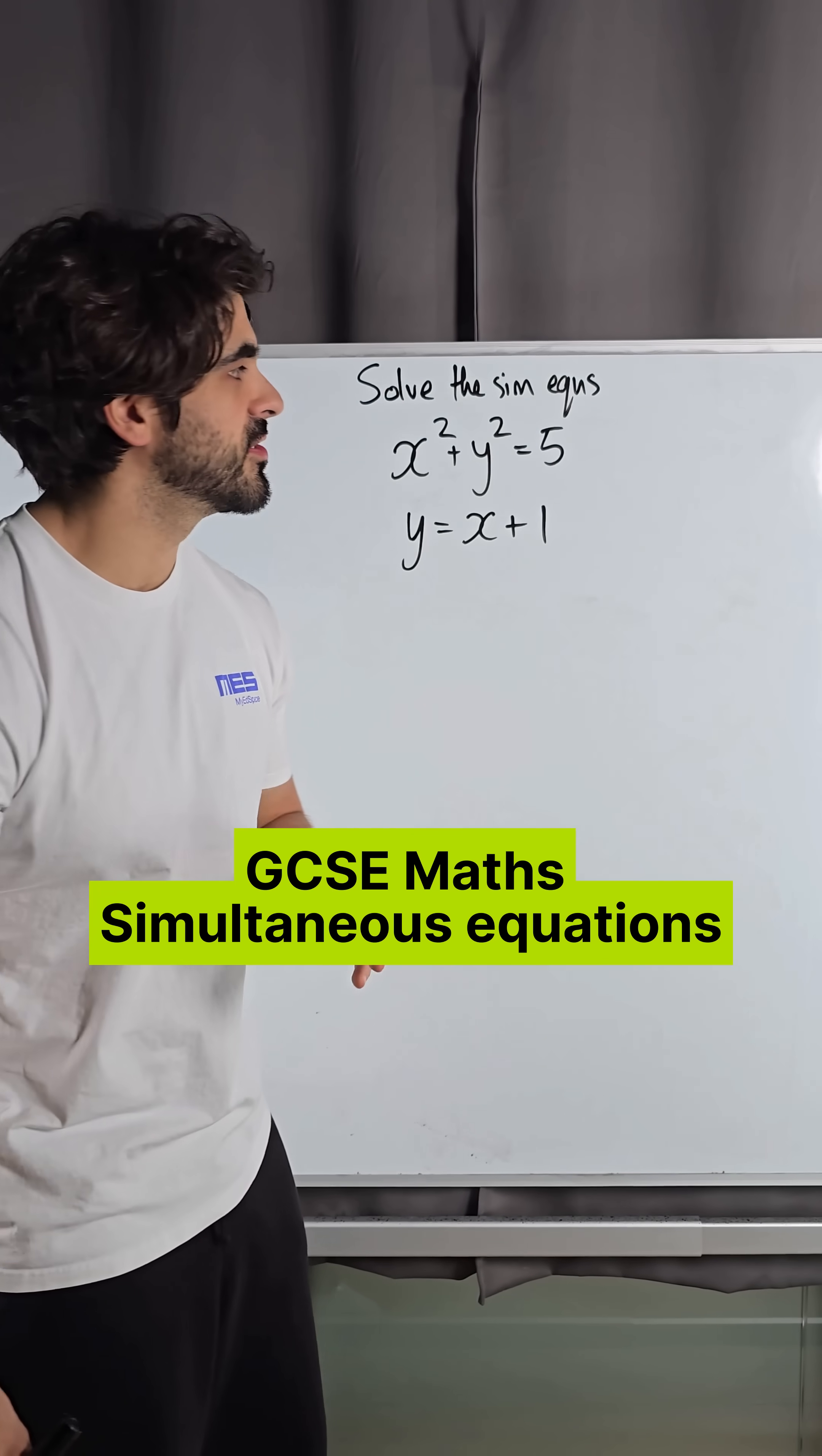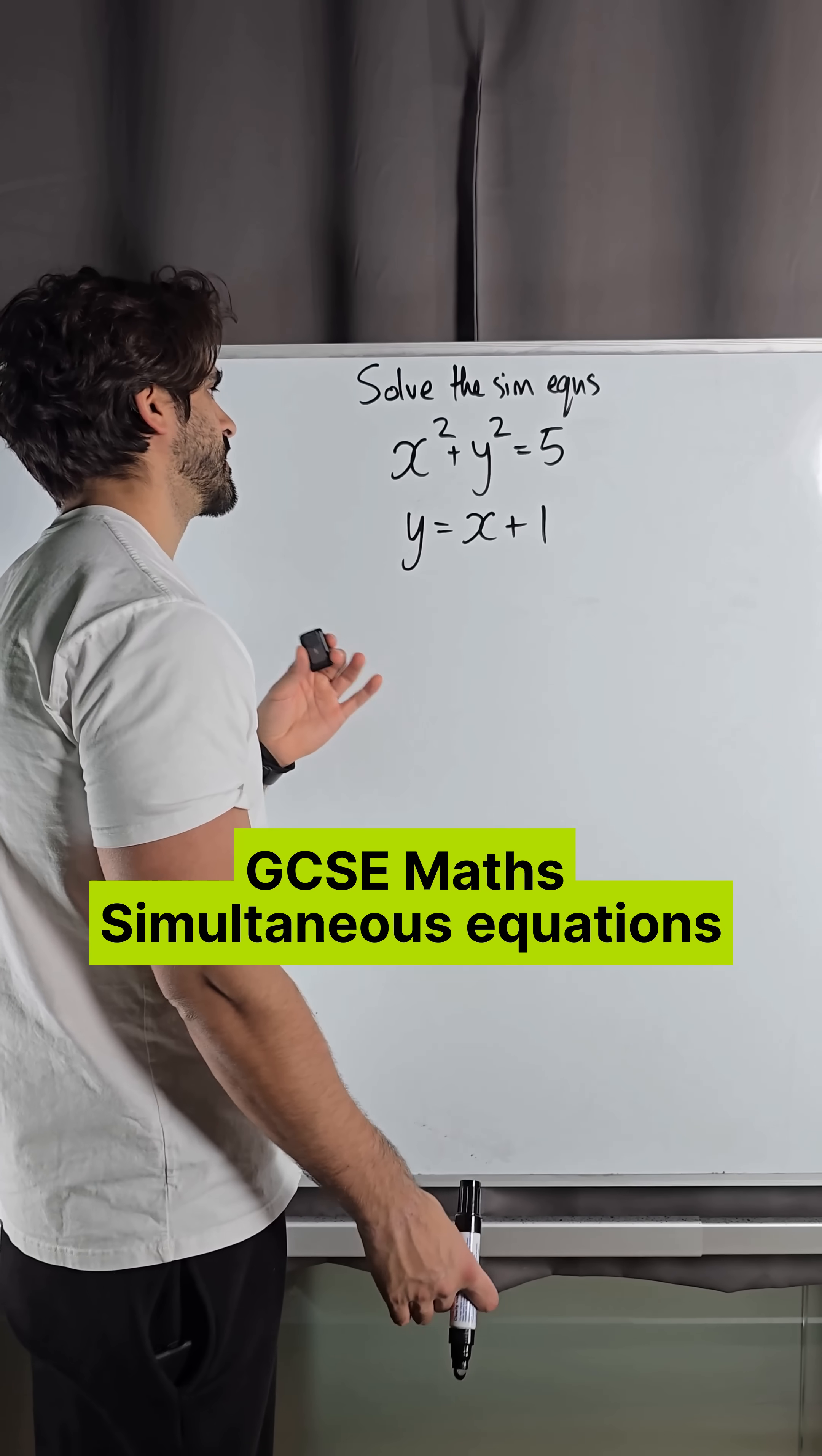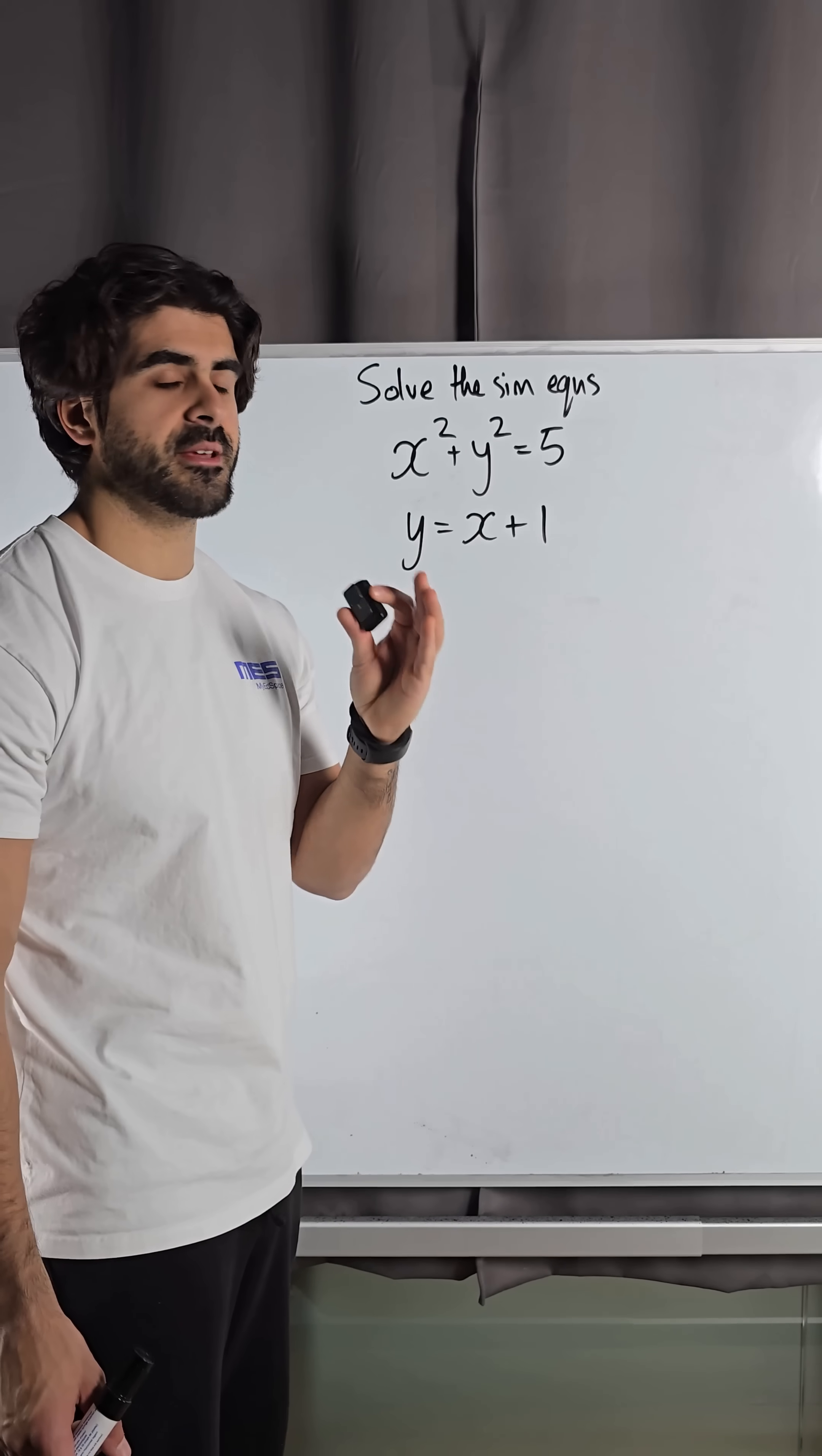One of my favorite topics at GCSE is quadratic simultaneous equations. We have x squared plus y squared equals 5, which is the equation of a circle, and y equals x plus 1. To solve them means to find the coordinates where they meet each other.